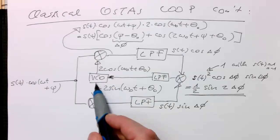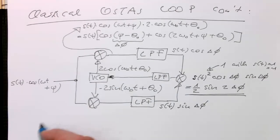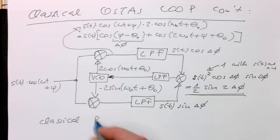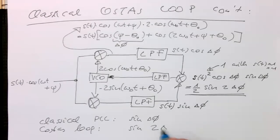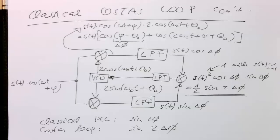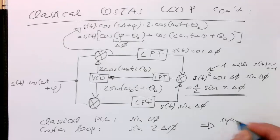Remember, in the classical PLL, this was sine of delta phi. So classical PLL was sine of delta phi. Costa's loop gives us sine of 2 delta phi. So that's the only difference. But the beauty of this is that as a result out of this, the symbol stream is eliminated. So symbol info eliminated.